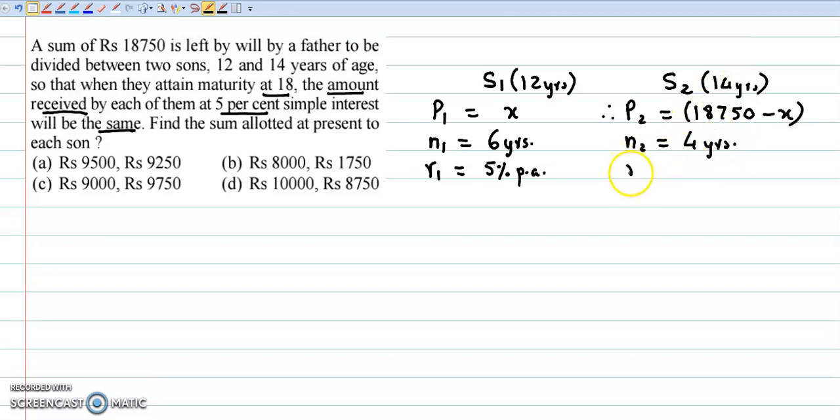Interest rate is 5% per annum. Now we have said that the amount received by the first son is equal to the amount received by the second son. This condition is given. So the amount is given by P into 1 plus nr upon 100. So let us apply the formula.